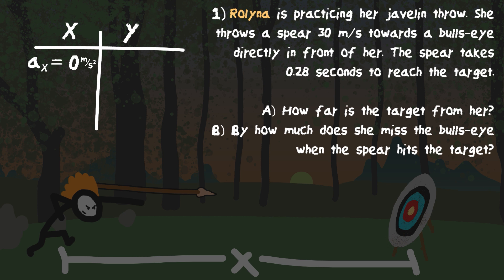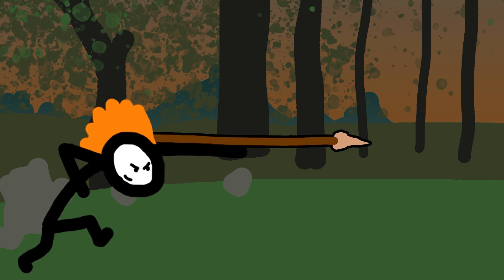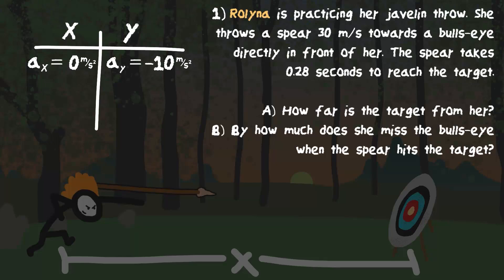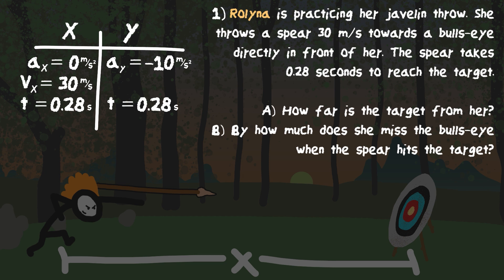There's nothing making the spear go faster or slower in the X direction — we don't account for air resistance in introductory physics. Acceleration in the Y direction is always gravity, and we'll use negative 10 meters per second squared. She throws the spear at 30 meters per second, which is all in the X direction, so the velocity in X is 30 m/s. The time of 0.28 seconds belongs to both X and Y directions.